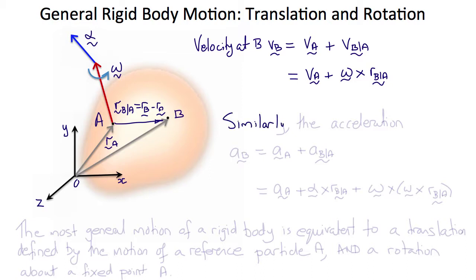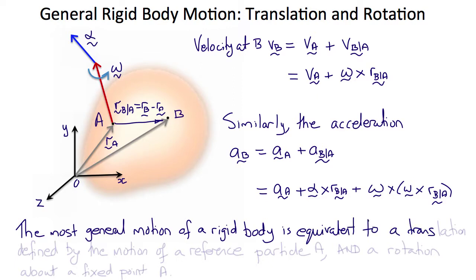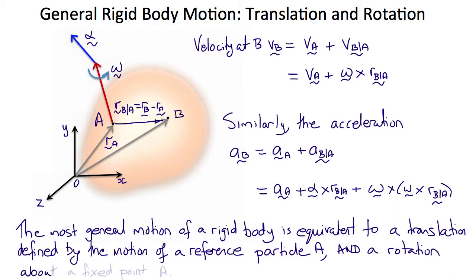Similarly for the acceleration, we can write that a_B equals a_A plus a of B relative to A, plus omega cross (omega cross r_B/A). So in other words, the most general motion of a rigid body is equivalent to a translation defined by the motion of a reference particle, in this case A, and a rotation about the fixed point A.